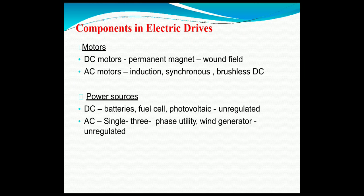From the block diagram, we can conclude that the electrical drive is small in size, efficient, and flexible in nature. The main components of drives are the motors, which may be AC or DC. DC motors may be permanent type or wound field, and AC motors may be induction, synchronous, or brushless DC motors.